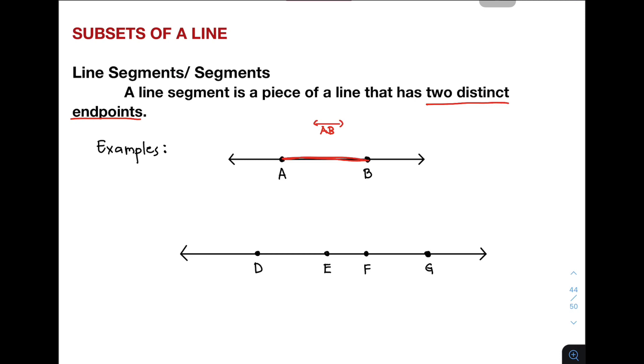To name that segment inside line AB, that is called segment AB. What if I will name that as segment BA? Is it acceptable or are they the same? Yes, they are the same. Either of the two is considered as a segment. We have segment AB or segment BA, they are just the same. Let's move on with the second example.